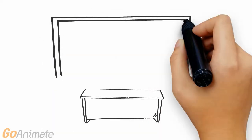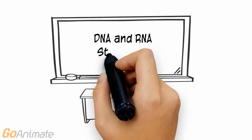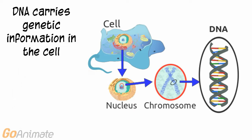Let's learn about the structure of DNA and RNA. The genetic information inside of the cell is carried by DNA, or deoxyribose nucleic acid. DNA is located in the nucleus of the cell.